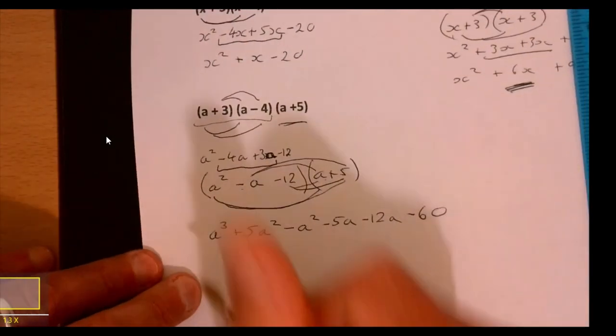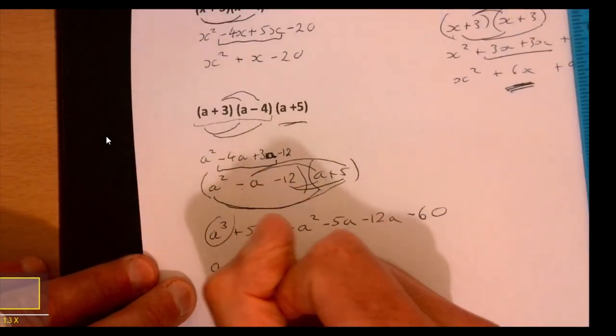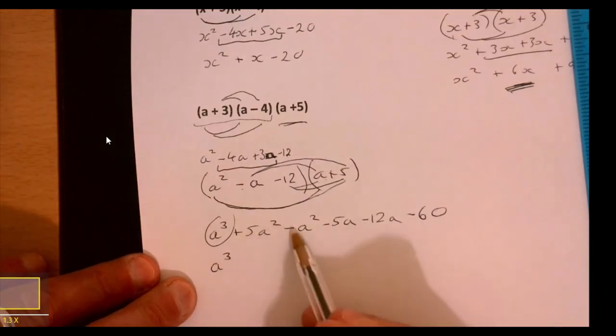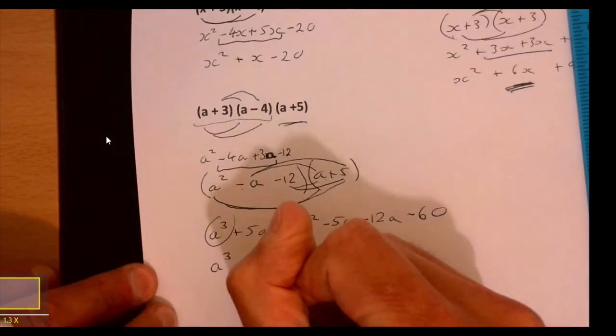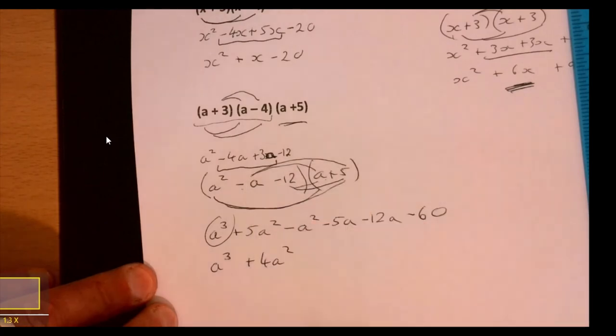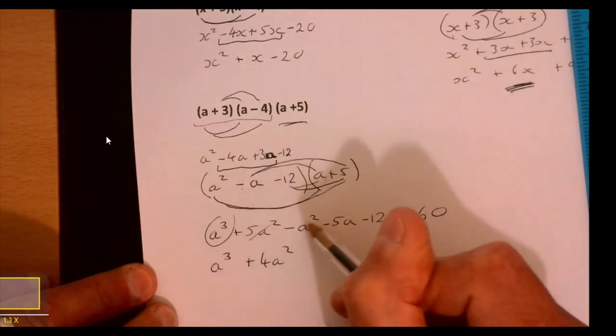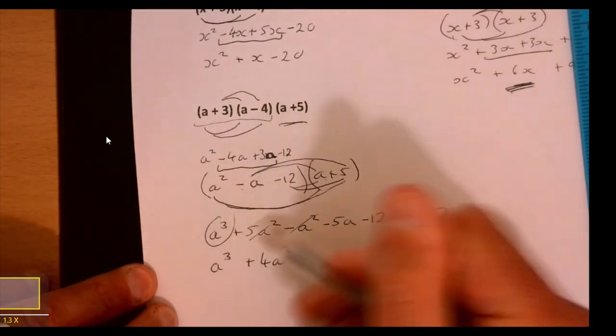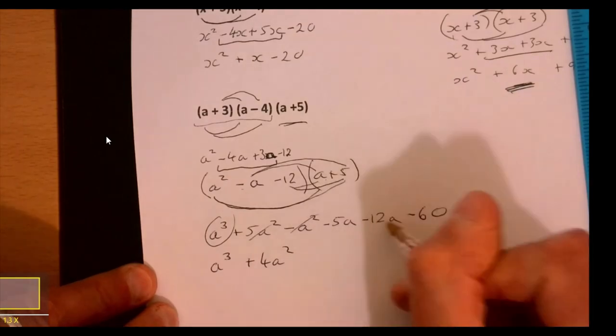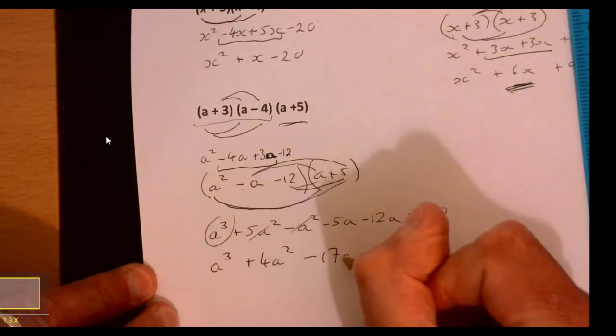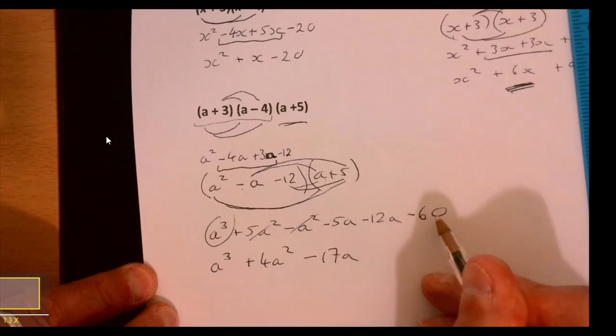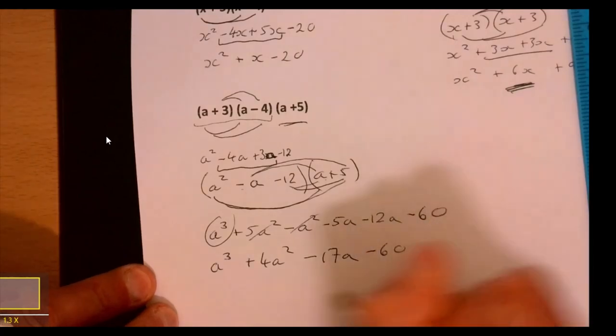We've got a cubed - just one of them. Five a squared minus a squared is 4a squared. You can cross them off as you go. Minus 5a minus 12a is minus 17a, and minus 60.